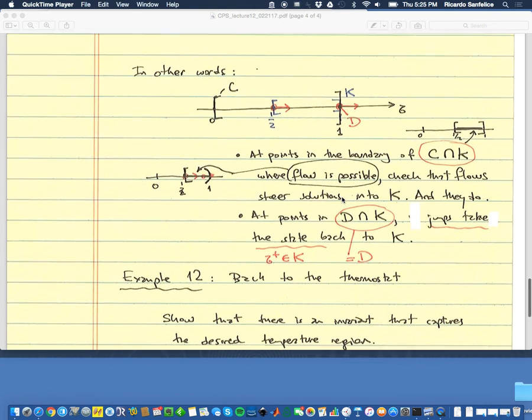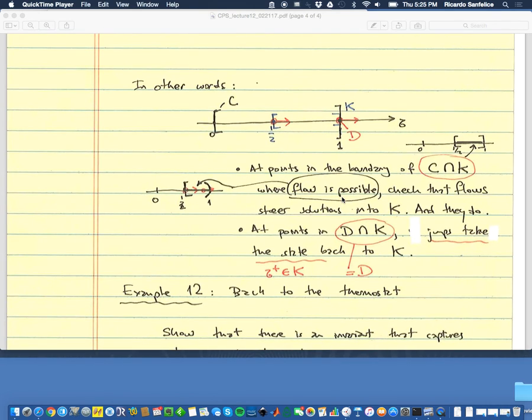In the previous lecture, lecture 12, we defined invariance. If you remember, we looked at a very simple problem: a timer that counts from 0 to 1 and then gets reset to a half. As you see, the trajectories not only remain in this interval, a half to 1, but also converge. We're going to talk about convergence later today.